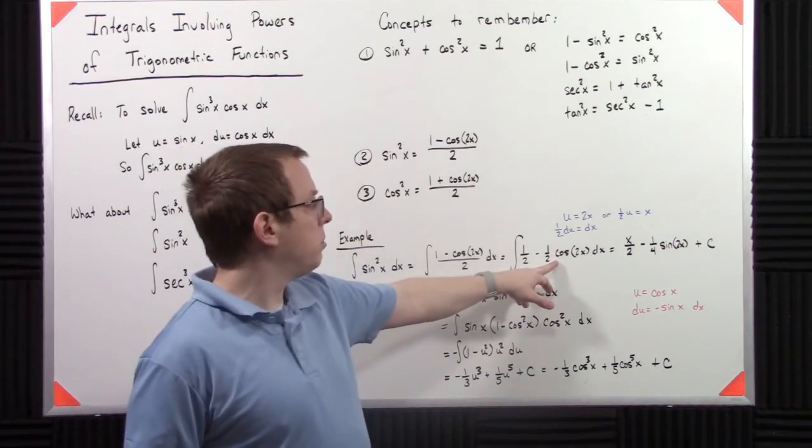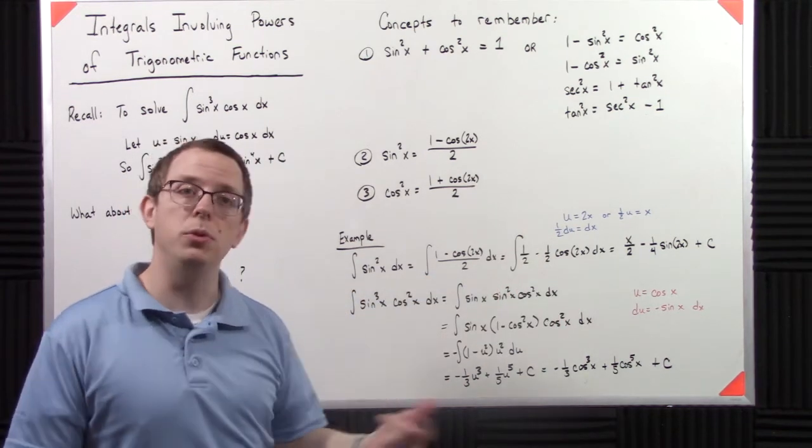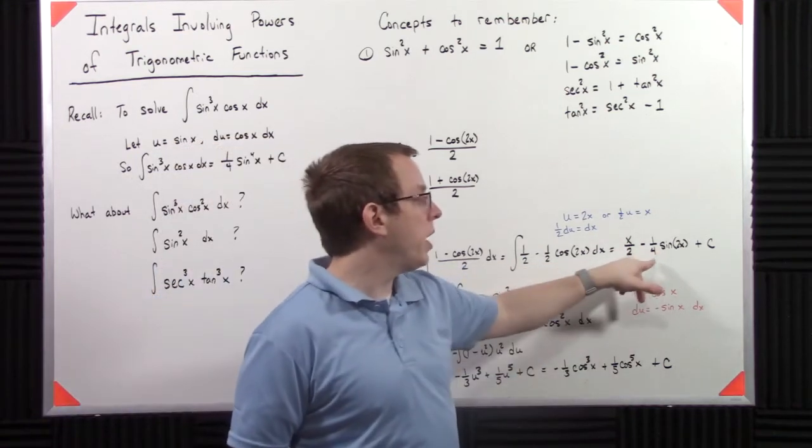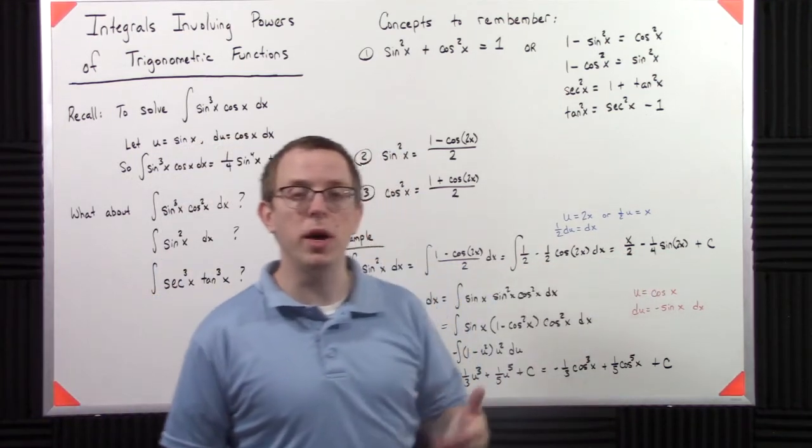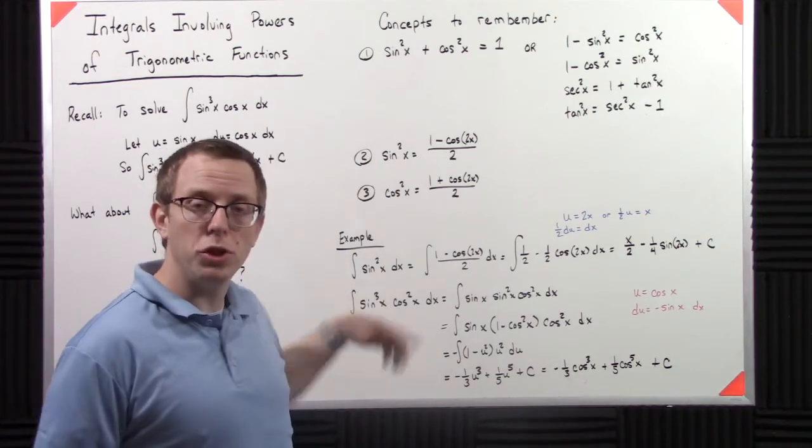But if you take that substitution, you end up with a negative 1 fourth cosine of u. That anti-derives to negative 1 fourth sine of u, but u is 2x. So you have negative 1 fourth sine of 2x plus c. So in general, these are actually fairly straightforward. You just have to kind of get there.